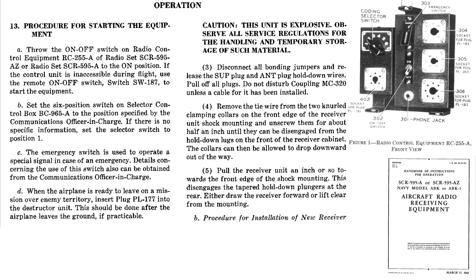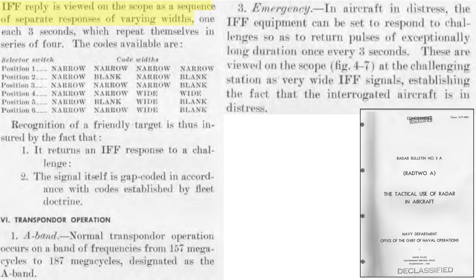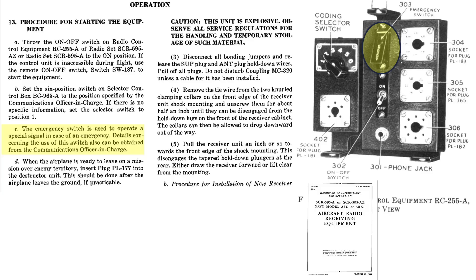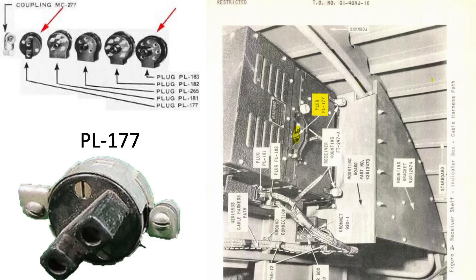Operation and features of the IFF control box are shown from a 1943 aircraft radio receiving equipment document. Turn the control box power on, then select the plane's IFF code position specified by the mission — each position sends a different responsive code when the plane is IFF challenge-triggered. Each channel replies with a different four-code combination signal; for example, position 1 replies with four narrow widths, while position 5 code is narrow-blank-wide-blank. The plane's transponder sends this code in a frequency range between 157 and 187 megacycles. Only use the emergency switch if the plane is in distress. At takeoff, insert the PL-177 plug into the top of the IFF receiver-transmitter detonator; this plug bridges the destructor circuit if activated.